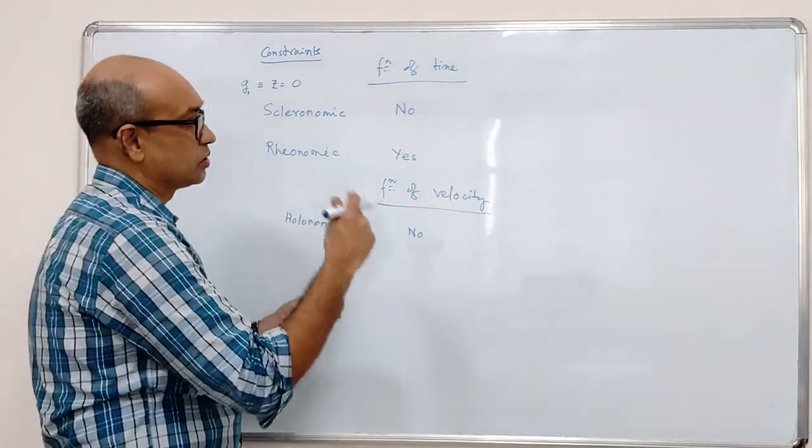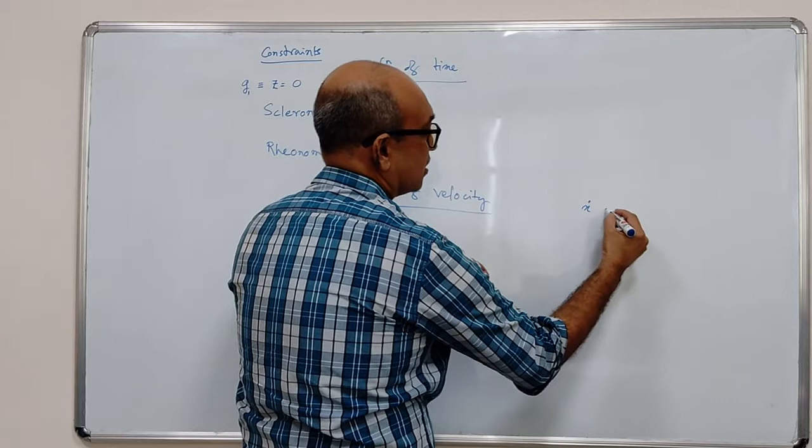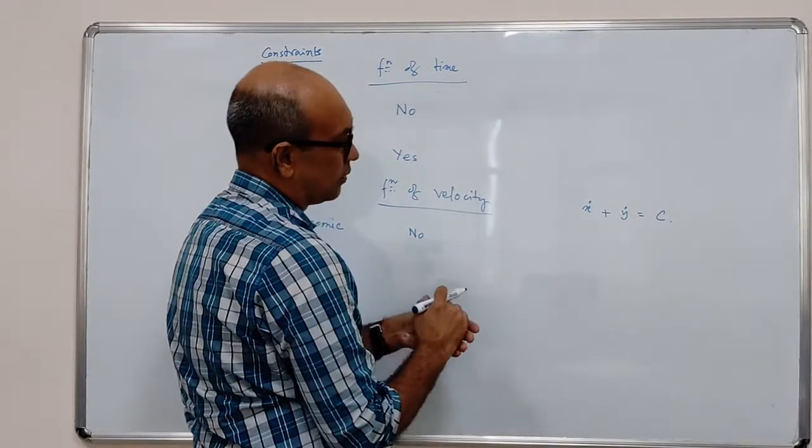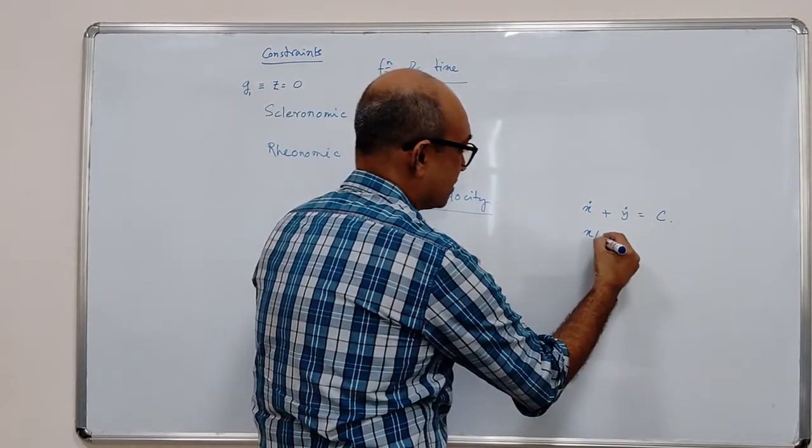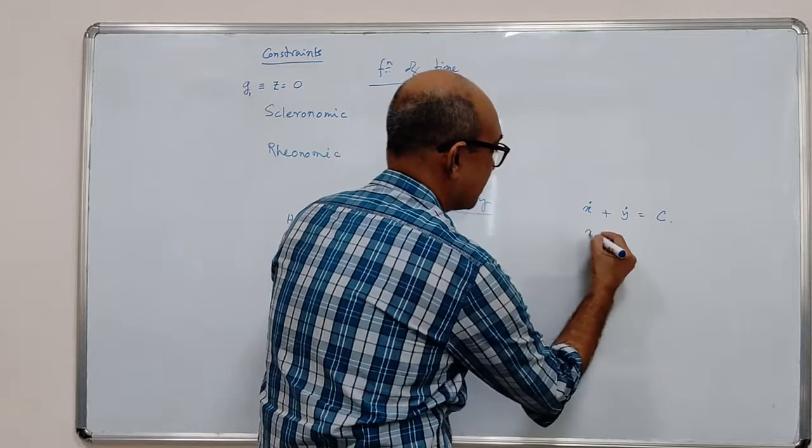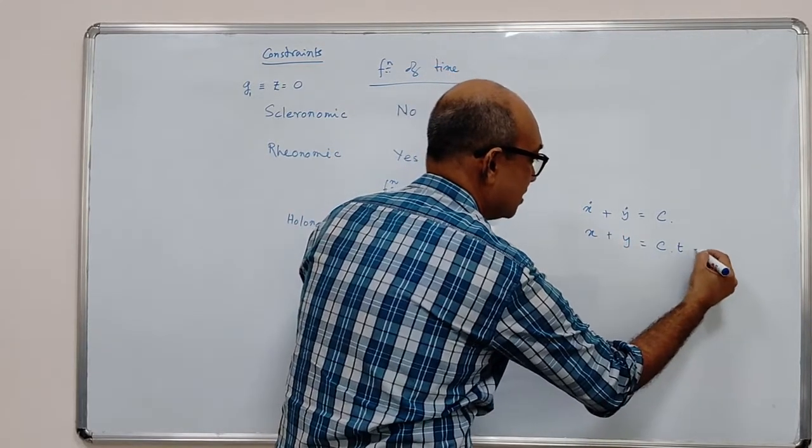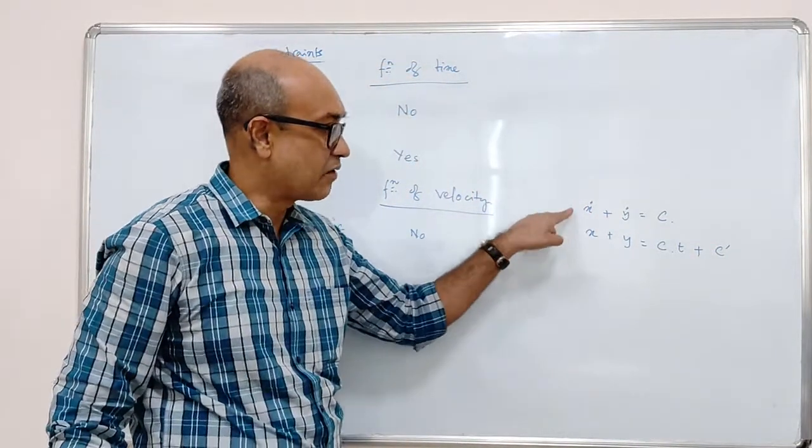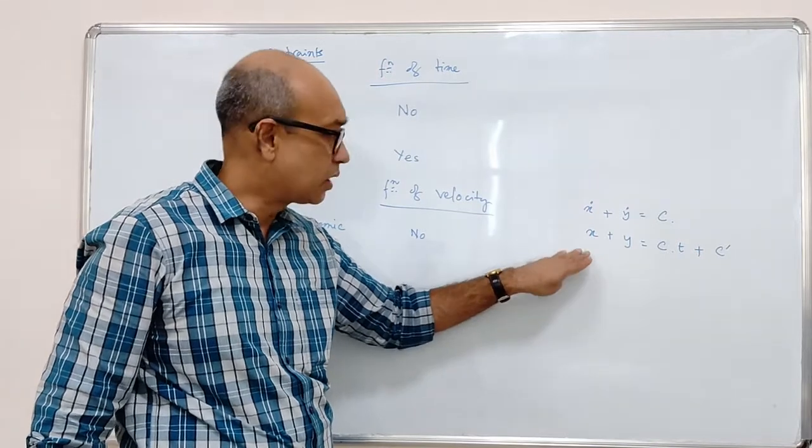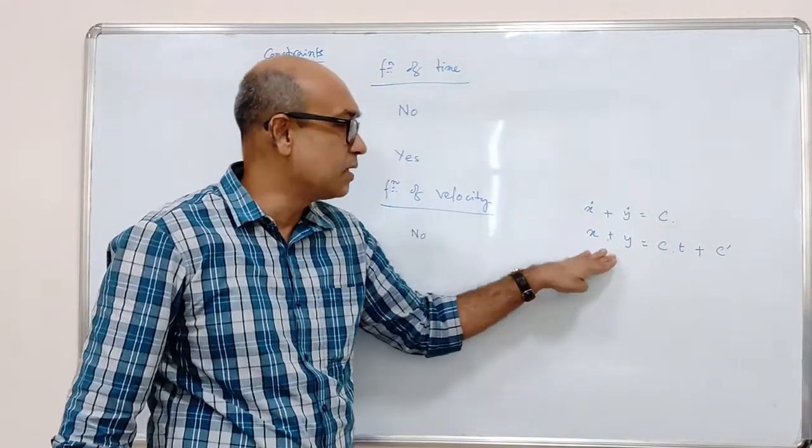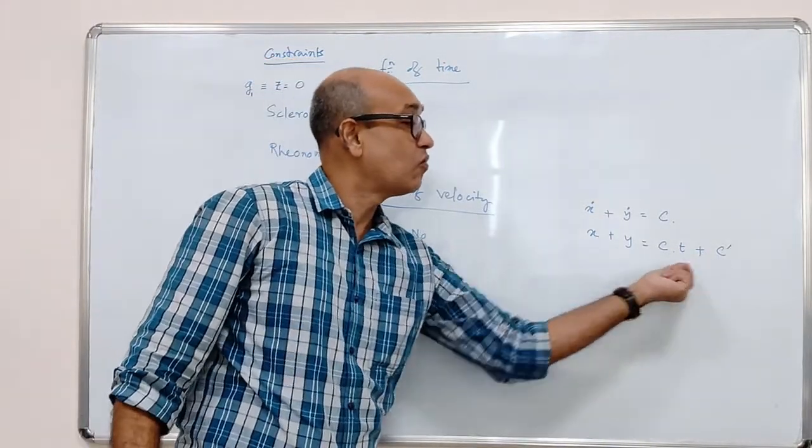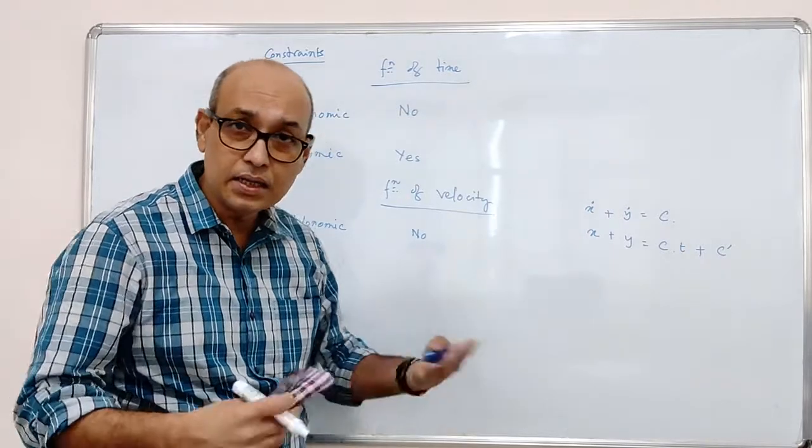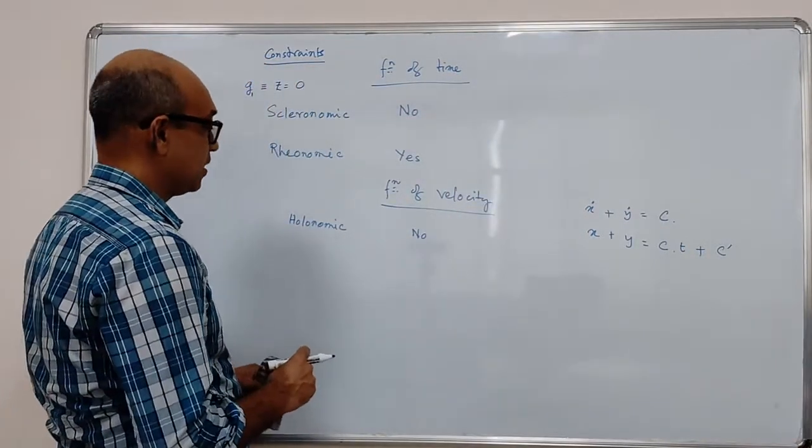Suppose you have a constraint, say, x dot plus y dot equal to some number c. Suppose this is your constraint. I can simply integrate it, and upon integration, you get x plus y equal to c times t plus some initial condition, let's say c prime. So instead of writing this, this would be a good example. If you can integrate it, you integrate it. If you do that, then there is no speed or velocity anywhere in the constraint. If you can do that, then these constraints are integrable. If you can integrate it, then this will be holonomic.